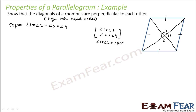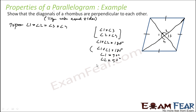If angle 1 + angle 2 = 180° and angle 1 = angle 2, then angle 1 + angle 1 = 180°, so angle 1 = 90°. Similarly, angle 2 = 90°. Since angle 2 = angle 4, angle 4 = 90°. And since angle 1 = angle 3, angle 3 = 90°. So we just need to prove that angle 1 = angle 2.